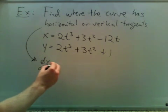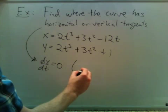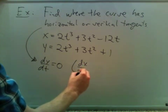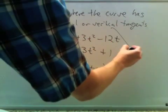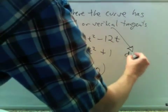when dy/dt is 0 and dx/dt is not 0, and we have a vertical tangent when the reverse is true.